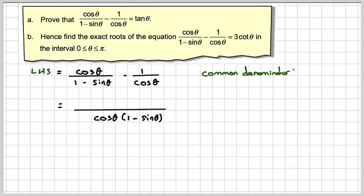So this would have to be multiplied by cos theta. That's going to give me cos squared theta. And then up here, being careful because there's a minus sign, put it in brackets, 1 minus sine theta.